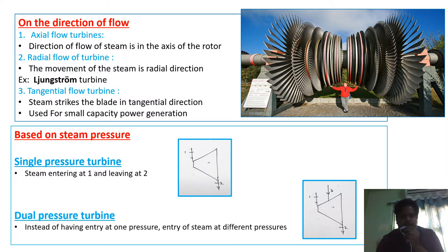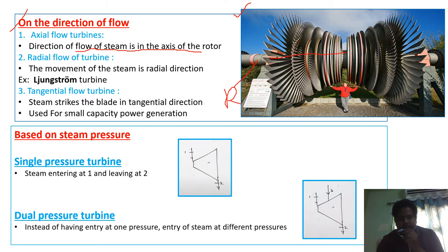The other classification of steam turbine is based on direction of flow. There are three types: axial flow turbine, radial flow turbine, and tangential flow turbine. In an axial flow turbine, the direction of flow of steam is along the axis of the rotor. In a radial flow turbine, movement of steam is in the radial direction — the steam moves radially outward or inward.